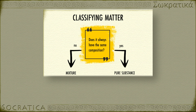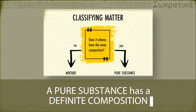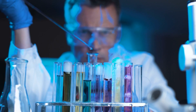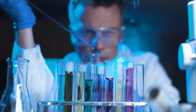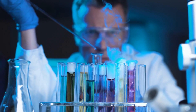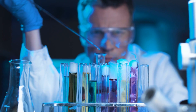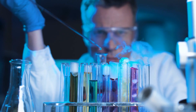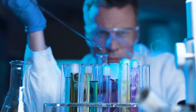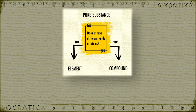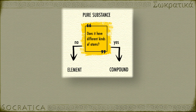A pure substance has a definite composition that doesn't change. That's why chemists want pure substances to work with. Imagine trying to run an experiment on the chemical behavior of something, and all your samples had different compositions—you wouldn't be able to conclude anything from your experiments. Pure substances are either elements or compounds.